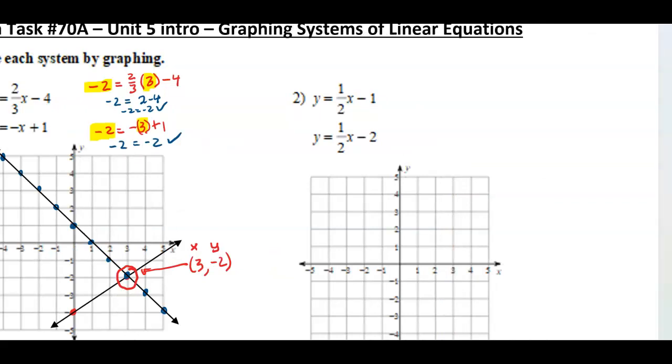Let's take a look at number 2. It might be a little bit different here. So our first one, we start at negative 1, and we go up 1, right 2, up 1, right 2, or down 1, left 2. So that's going to be our first line.